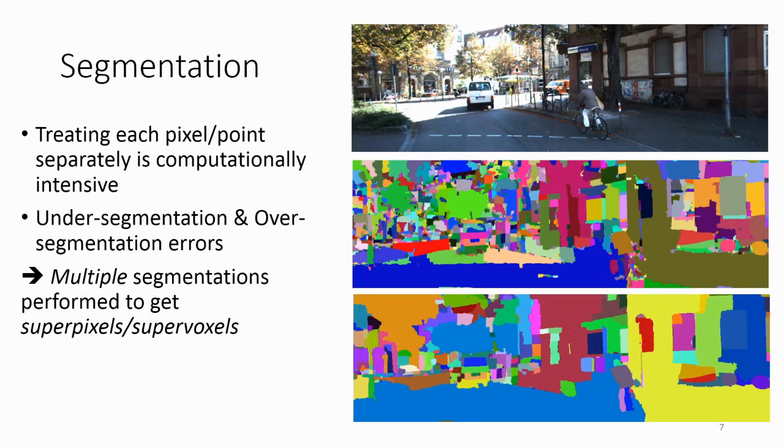The reason we do segmentation is that treating each pixel or point in the point cloud separately is very computationally intensive. So it helps to first group similar pixels or points together. However, if you stick to a single segmentation and commit to it early in the pipeline, this may result in over- or under-segmentation errors, which then you're stuck with. As a result, we make the design decision to use multiple segmentations to get multiple levels of super pixels or super voxels. In this example, the top is an example input image. On the middle is a fine segmentation and the bottom is an example coarse segmentation.